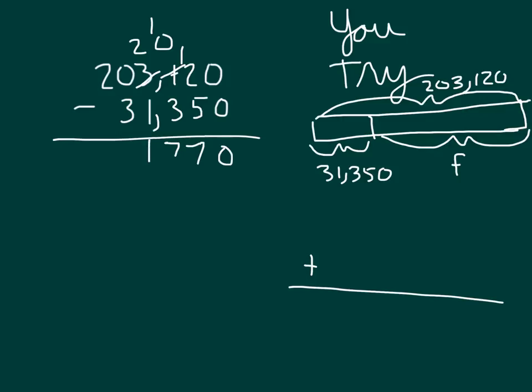0 minus 3, I cannot do that. Therefore, I regroup from the ten thousands place, where one of those ten thousands equals ten thousands. 10 minus 3 is 7, and that 1 can come down. Count my places off: 1, 2, and 3 leaves me with F equaling 171,770.